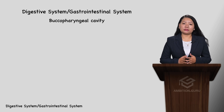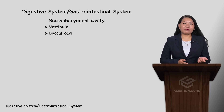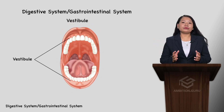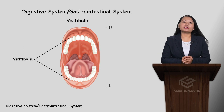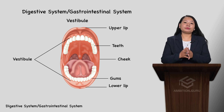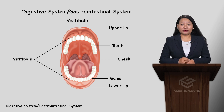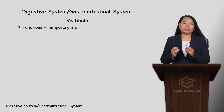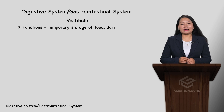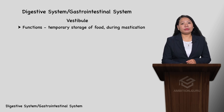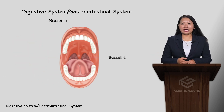The mouth leads into the bucopharyngeal cavity, which is divided into three parts: the vestibule, buccal cavity, and pharynx. The vestibule is a narrow space externally bounded by the lips and cheeks, and internally bounded by the teeth and gums. The function of the vestibule is temporary food storage, especially during the mastication process.